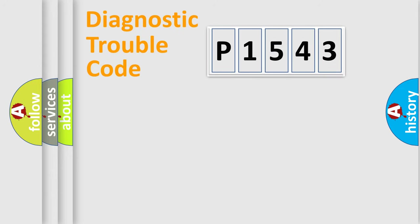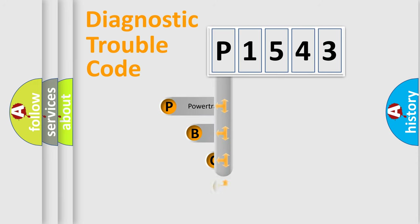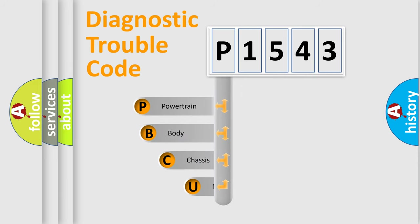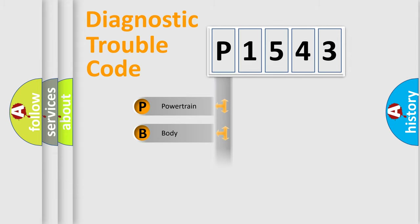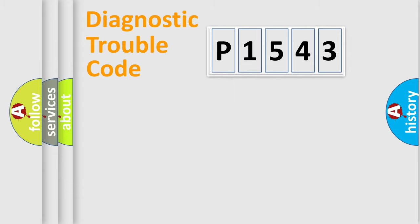Let's do this. First, let's look at the history of diagnostic fault code composition according to the OBD2 protocol, which is unified for all automakers since 2000. We divide the electric system of the automobile into four basic units: Powertrain, Body, Chassis, and Network.